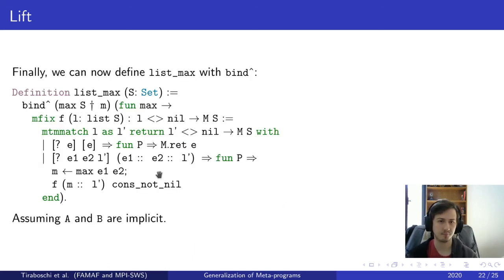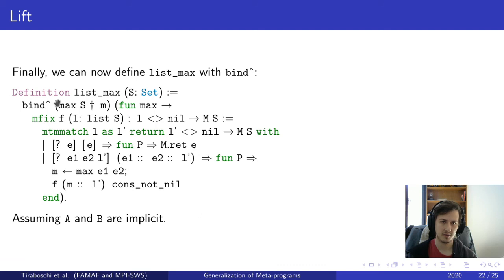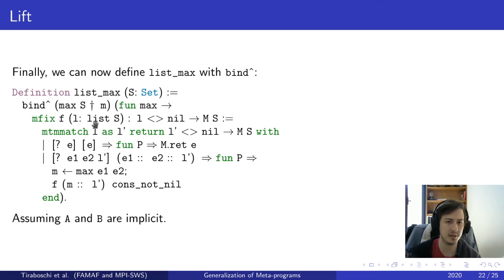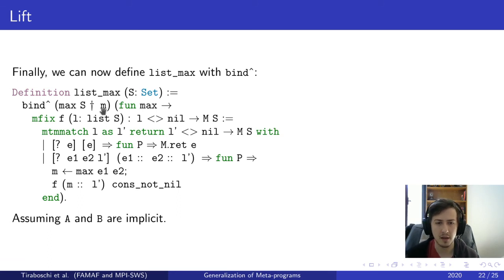Finally, we can now define list_max using our new bind. The important thing here is this new bind we already defined. We'll also need to lift max_s, because as you saw, everything has been generalized — every part of the function. So we lift max_s as well using the same telescope, and we use the new mfix. As you can see, everything should fit now.